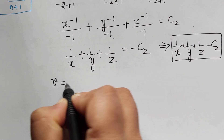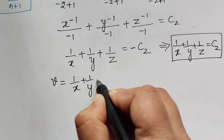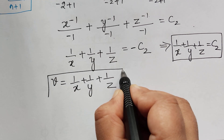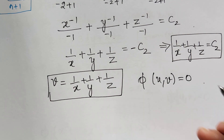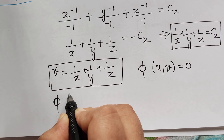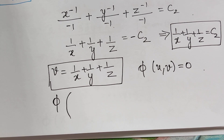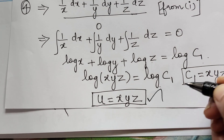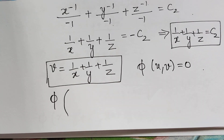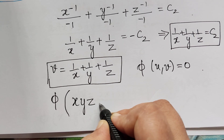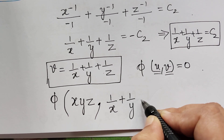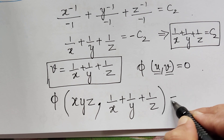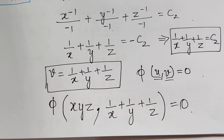We have obtained both solutions u and v. The general solution is written as phi(u, v) = 0. Substituting, the general solution is phi(xyz, 1 by x plus 1 by y plus 1 by z) = 0. This is the general solution for this given problem.